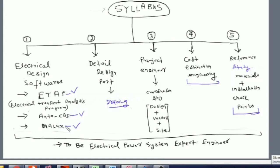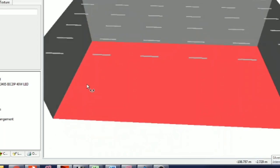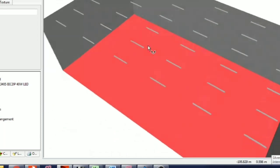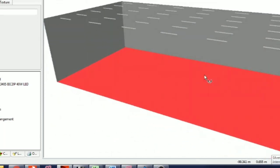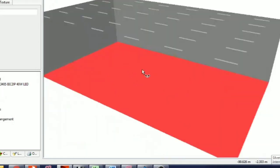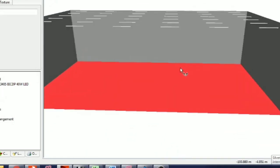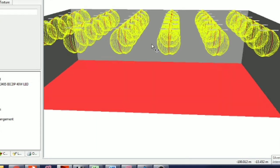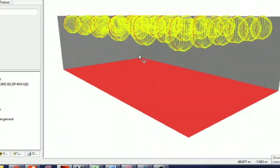In Dialux, we will do illuminance designing and calculate how many light fixtures are required. We have this control room building where we have placed light fixtures. We will learn quantity calculations, placement arrangement, and light distribution display through the Dialux software.